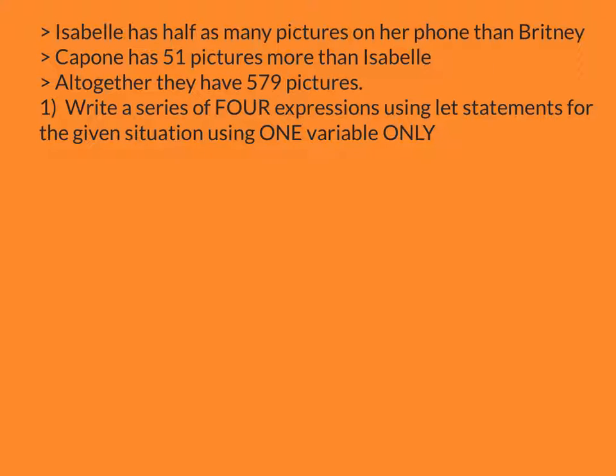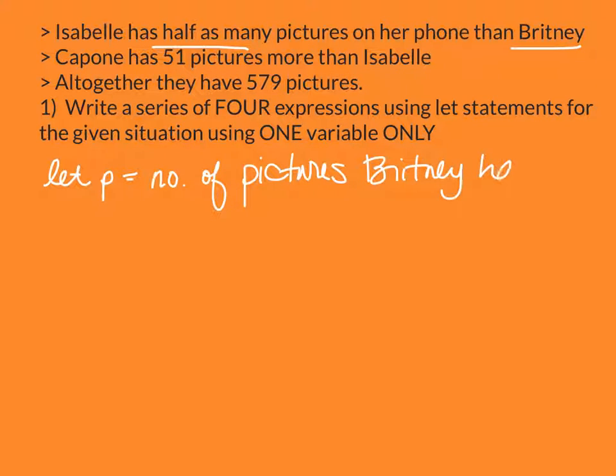Isabel has half as many as Brittany. So the first one we need to know is Brittany. We're going to say let P equal number of pictures Brittany has. And then we know that Isabel has half as many. So that means we're going to take that P and divide it in half. P divided by 2 is the number of pictures Isabel has.